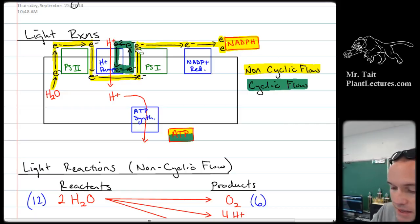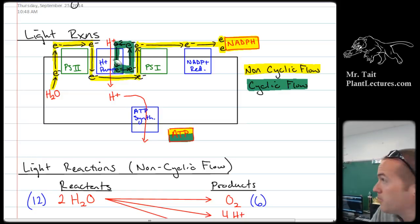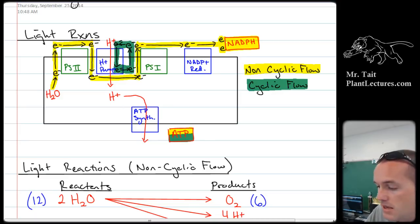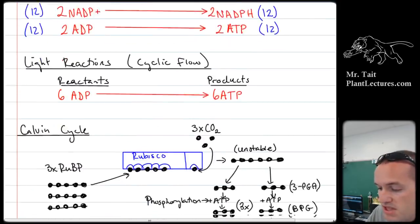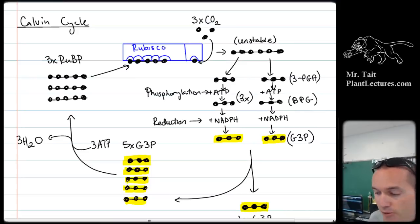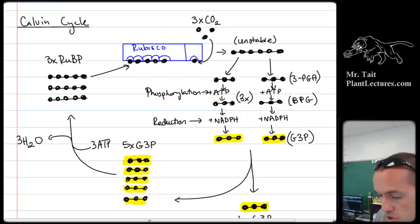Cyclic flow just uses photosystem I and the H-plus ion pump to continually make electrons travel around, and that will only make an H-plus ion gradient, which therefore only makes ATP. This is important because the Calvin cycle uses more ATP than it does NADPH, and therefore you're going to have to make different amounts of ATP and NADPH.